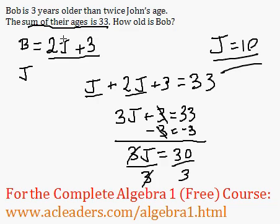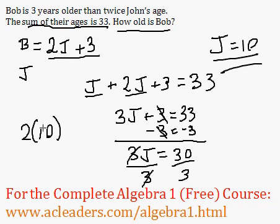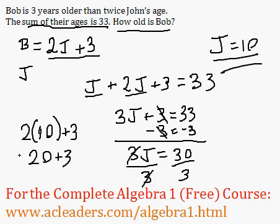How about Bob? That's the question — how old is Bob? Bob's age is 2J plus 3. So 2J, because J is 10, plus 3. So 2 times 10 is 20, plus 3 is 23. So Bob is 23.